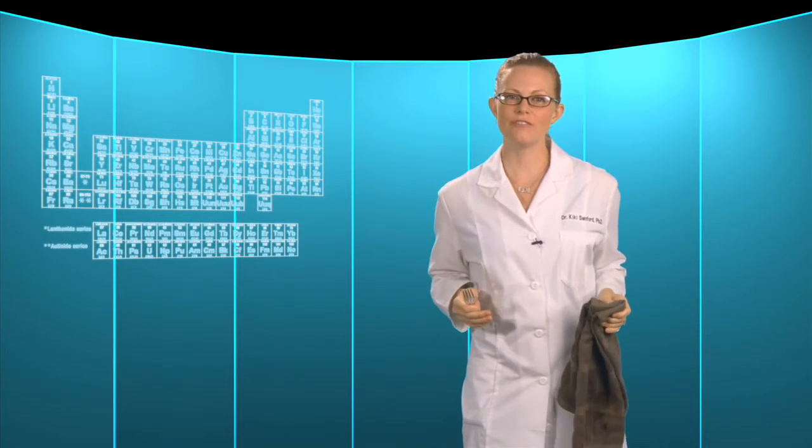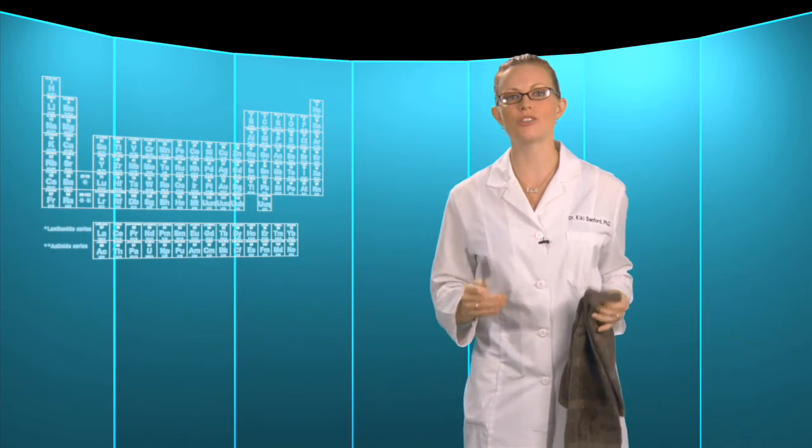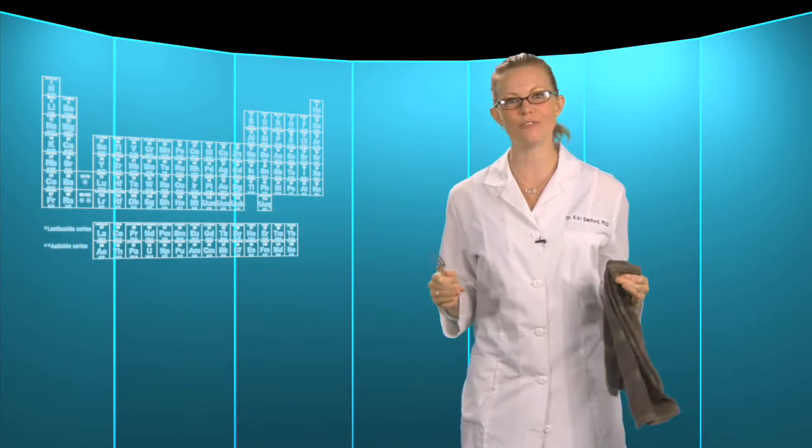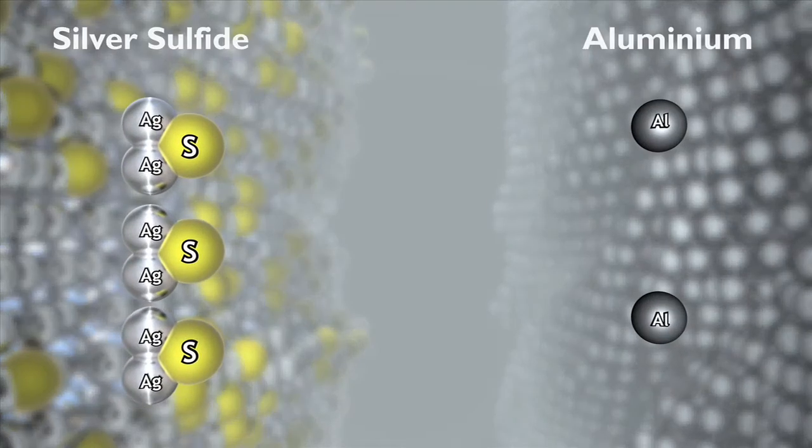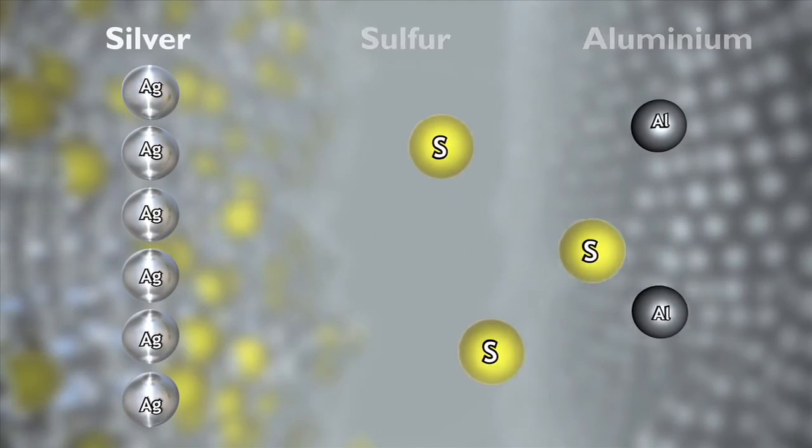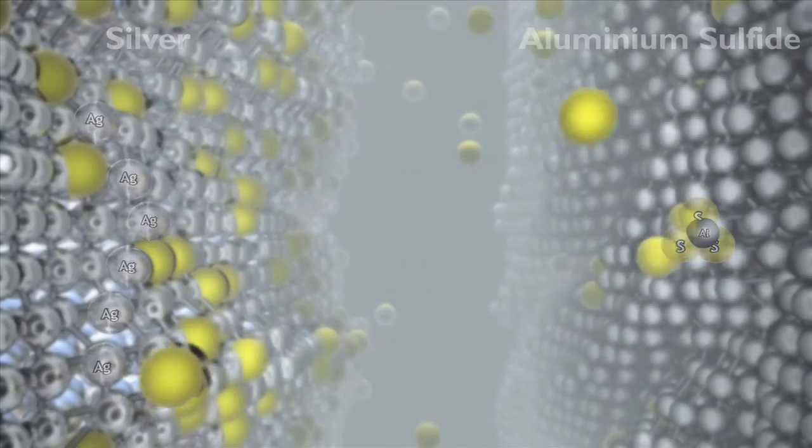In the reaction involving the aluminum plate, the silver sulfide is chemically converted back into silver, so you don't actually lose any silver. Many metals in addition to silver will form compounds with sulfur, but some of them, like aluminum, actually have a greater affinity for the sulfur. In this experiment, the sulfur atoms are being transferred from the silver to the aluminum, freeing up the silver and forming aluminum sulfide.